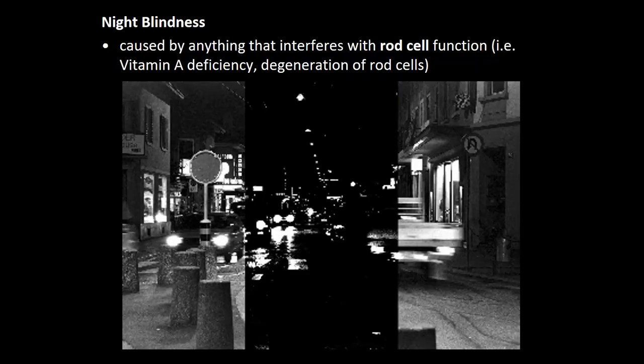If anything interferes with the function of rod cells — such as vitamin A deficiency or rod cell degeneration — a person has what we call night blindness. They can see just fine when there's lots of light, but in low-light conditions they have a really difficult time seeing. Another consequence of rod cell degeneration is loss of peripheral vision, or tunnel vision — a person can see when looking right at something, but everything in the periphery is blurred.